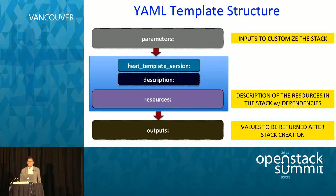The resources section is the key section that is required — it is where you describe what you want. The output section is basically the values to be returned after the stack has been created. For instance, you may want the IP address that has been dynamically assigned, and you want to get that value after the stack has been created and pass it on to a different application. So you can ask the stack to return certain outputs.